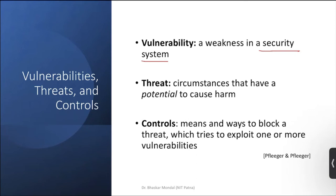Then, threats. What is a threat? Circumstances that have a potential to cause harm. Any circumstances that can occur in the information system or in the architecture will be called a threat. And what are controls? Controls are means and ways to block a threat.